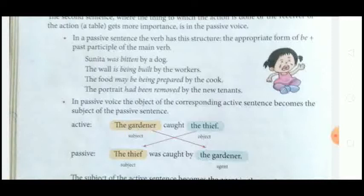In all these passive sentences we used be plus the past participle of the main verb. So the structure of a passive sentence is: be + past participle of the main verb, whether you are converting an active sentence to passive or forming a passive sentence directly.